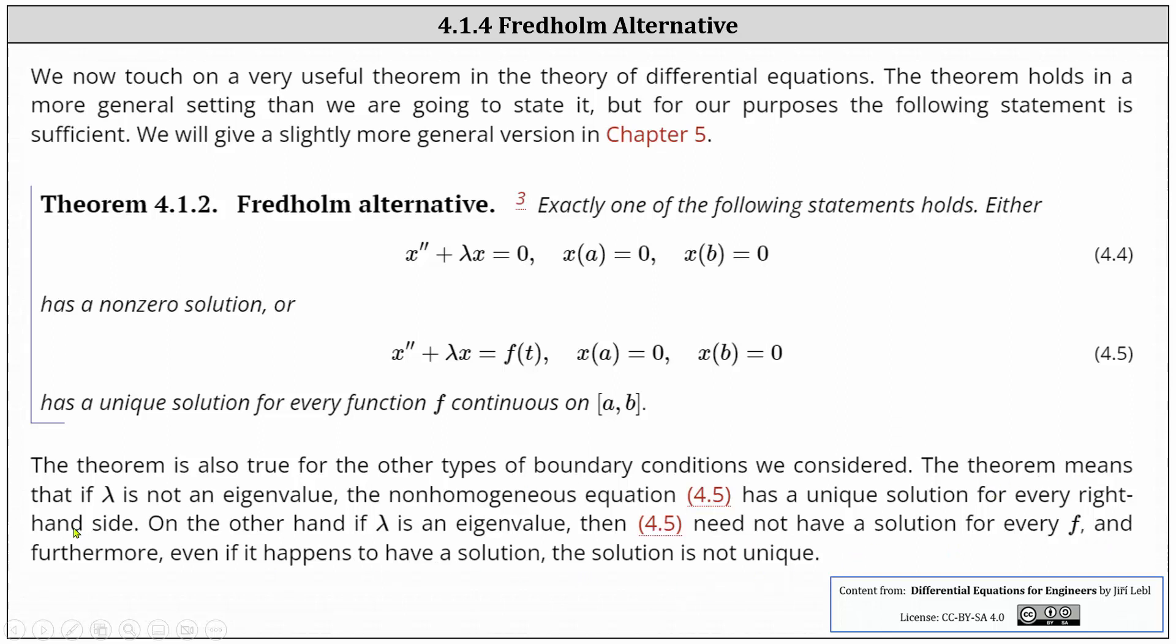So again, the theorem means that if lambda is not an eigenvalue then the non-homogeneous equation 4.5 has a unique solution for every right hand side. On the other hand if lambda is an eigenvalue then the non-homogeneous equation 4.5 need not have a solution for every f and furthermore even if it happens to have a solution the solution is not unique.